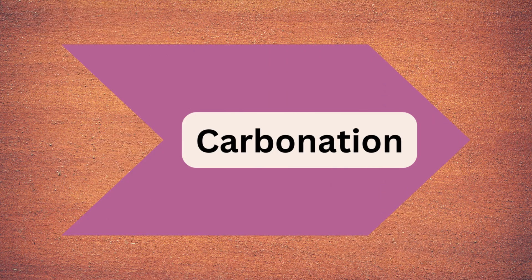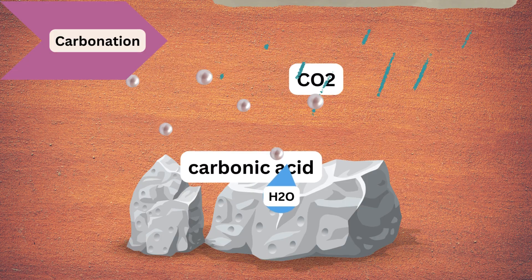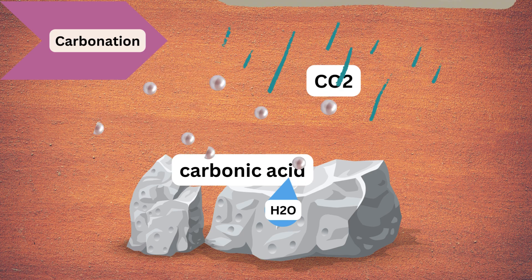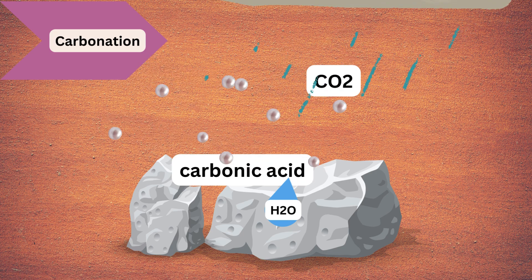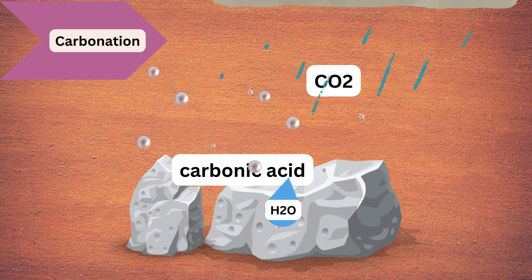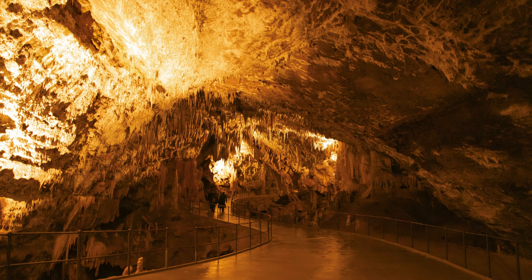Next is carbonation. Carbon dioxide in water forms carbonic acid, which reacts with minerals like calcium carbonate and limestone. Consider the white stone as representing carbon dioxide. Through carbonation, karst topography features such as sinkholes and caves are mainly formed.